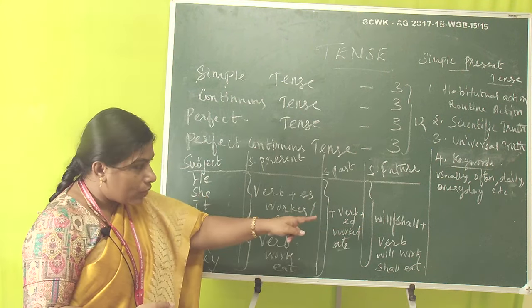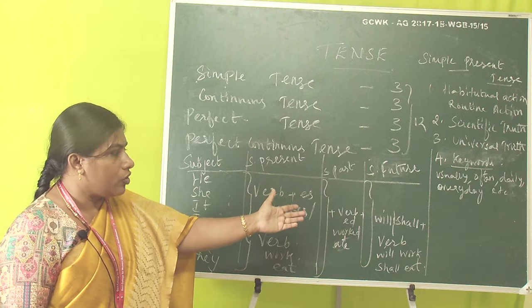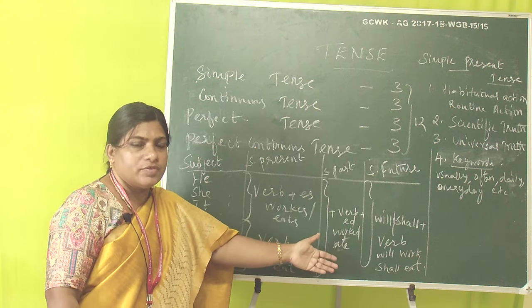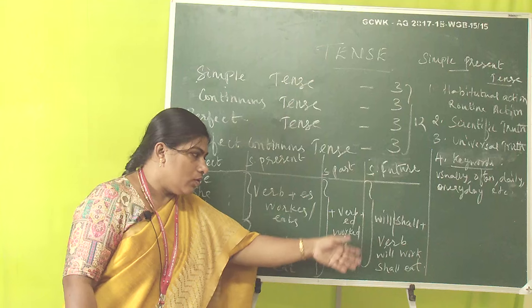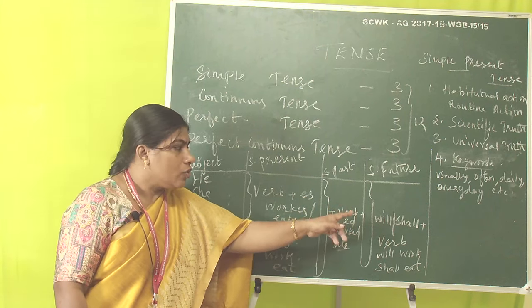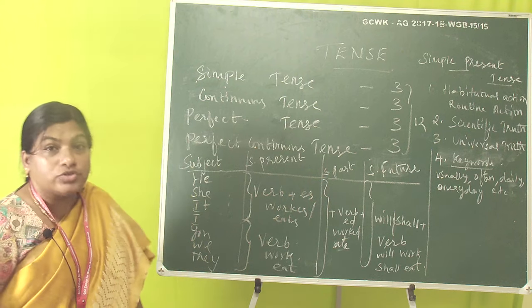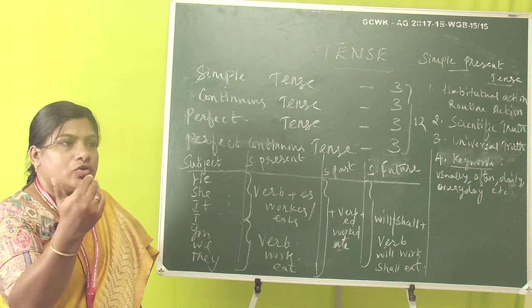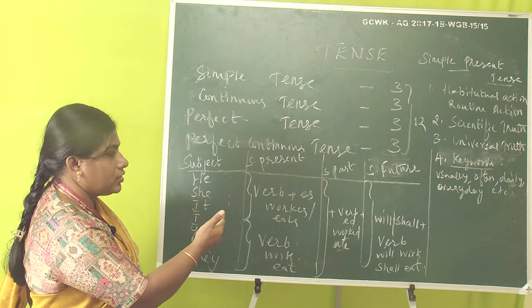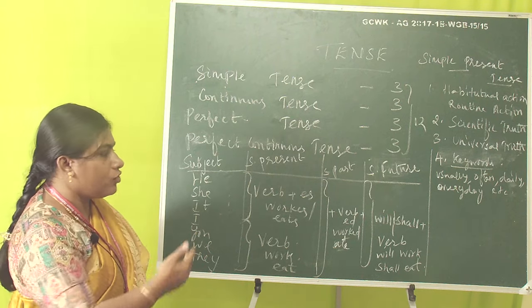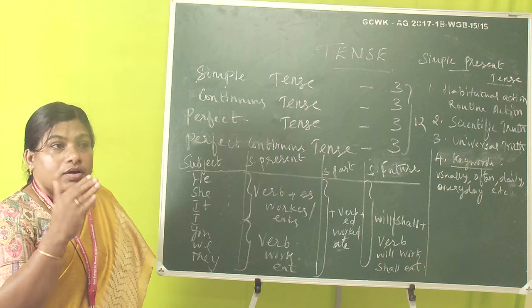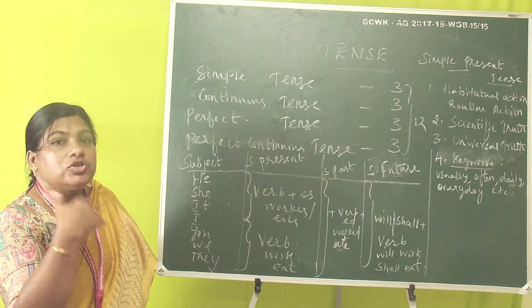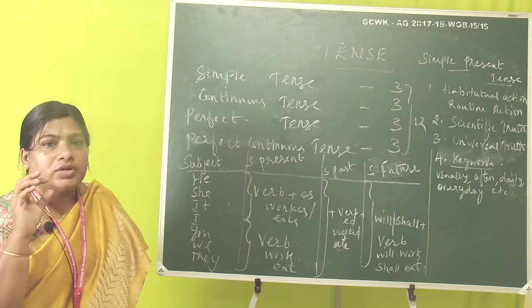After will or shall, you place the base form of the verb — for example, 'will work' or 'shall eat'. Keywords for future tense include: tomorrow, day after tomorrow, next month, next Friday. These keywords indicate something that will happen in the future.